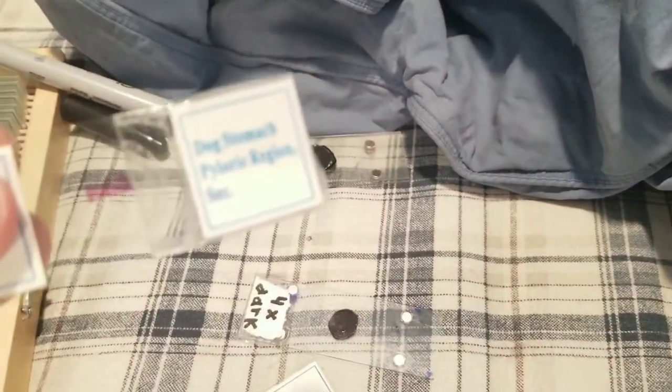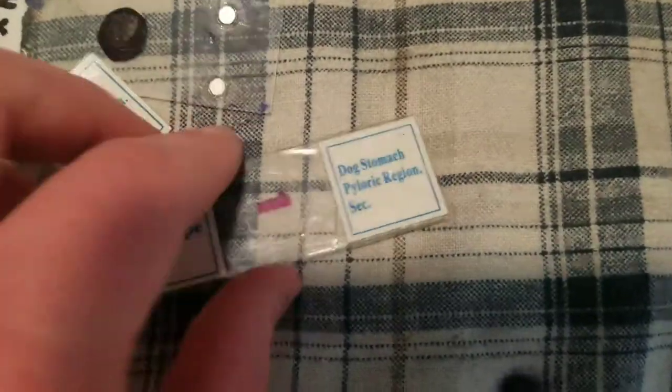Let's try the 4x dark field, and this time I'm not going to use cholera. I'm going to use another sample. This time, the sample is going to be, eeny meeny miny moe, dog stomach, pyloric region.